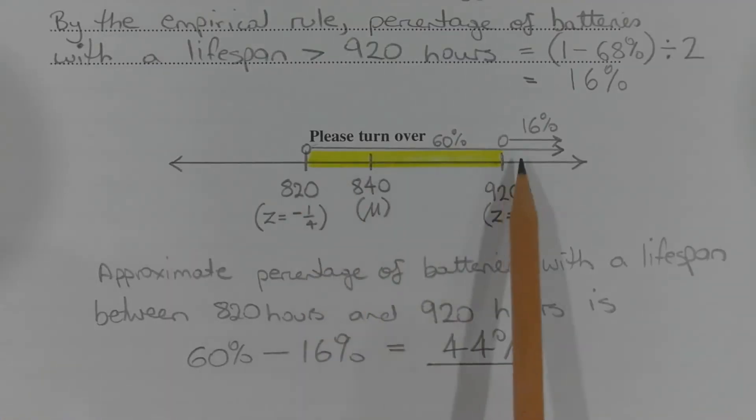The highlighted region on the number line represents the percentage of batteries with a lifespan greater than 820 hours and less than 920 hours. Now the percentage of batteries with a lifespan greater than 820 hours is 60%, which is indicated by this arrow here.